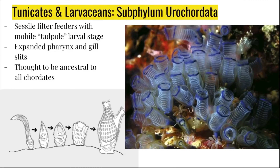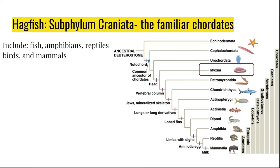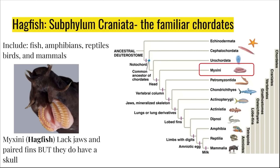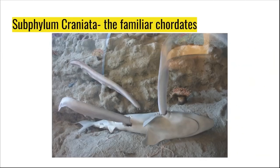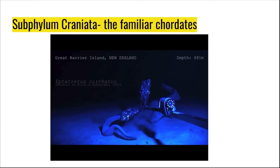It's thought that tunicates are ancestral to all chordates. The next group of chordates are the craniates. The first group we'll look at is Myxini. The Myxini are the hagfish. Hagfish lack jaws and paired fins, but they do have a skull. You can see that their teeth are radially located but don't seem to be attached to any kind of jaw. Hagfish are marine scavengers. Here you can see hagfish eating the dead body of a shark. As an anti-predatory defense, hagfish produce slime.